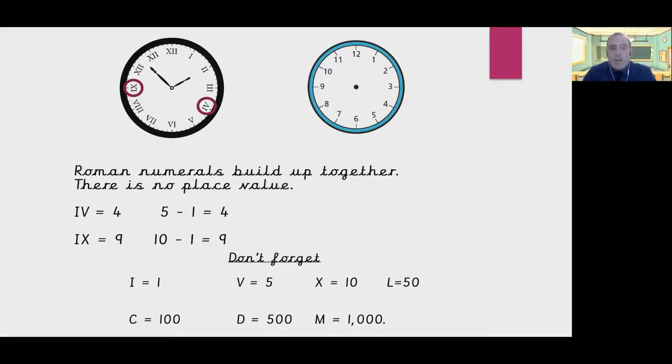And if we look at the other number I've circled, IX, that's 9, we can see that by comparing the two clock faces. Again, the smaller number's written before the bigger number, so 10 take away 1 will give us 9.